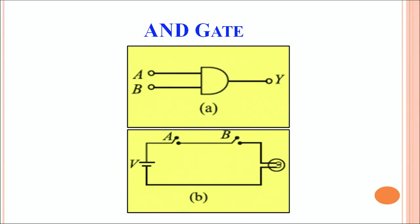Let's look at the AND gate. The first figure shows the symbol of the AND gate. A and B are the inputs and Y is the output. To realize the AND gate using switches: A and B are two switches representing the inputs, and the bulb represents the output. When we switch on A, initially both A and B can be kept in the off mode.